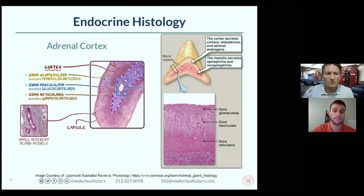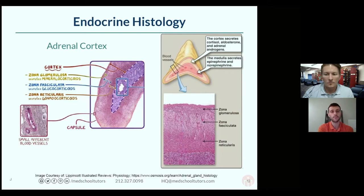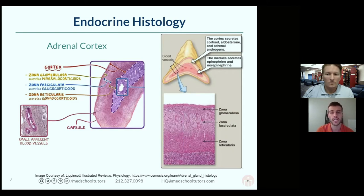The very innermost layer — the adrenal medulla — is where you're secreting catecholamines: epinephrine and norepinephrine. These are neuro-endocrine in origin, neurally controlled but releasing hormones. Those cells tend to appear very small and very blue — a tip-off that you've moved into a new part of the adrenal gland, going from the cortex into the innermost layer.